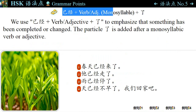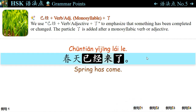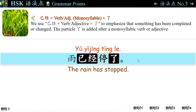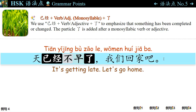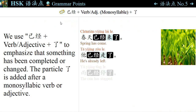语法点五: We use 已经 plus verb or adjective plus 了 to emphasize that something has been completed or changed. The particle 了 is added after a monosyllabic verb or adjective. 例句一: 春天已经来了。 Spring has come. 来 is a monosyllabic verb. 例句二: 他已经走了。 He's already left. 走 is a monosyllabic verb. 例句三: 雨已经停了。 The rain has stopped. 例句四: 天已经不早了，我们回家吧。 It's getting late, let's go home. Structure: 已经 plus verb or adjective plus 了。